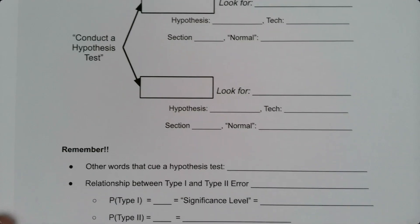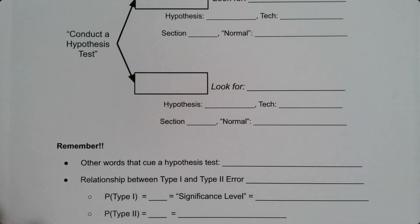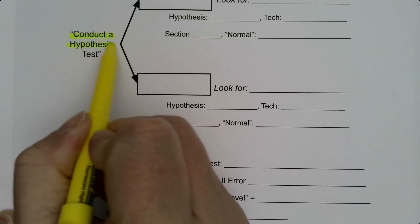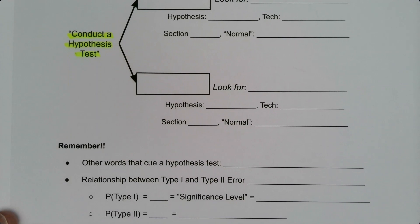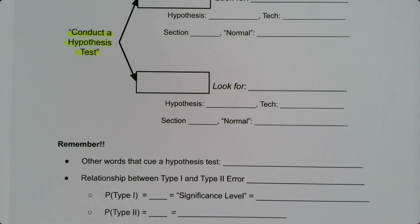First thing to know is when are you going to know that they're asking you to run a hypothesis test. One of the big signs is they'll say the words 'conduct a hypothesis test,' which is always a sign, or if they ask for the p-value or method.